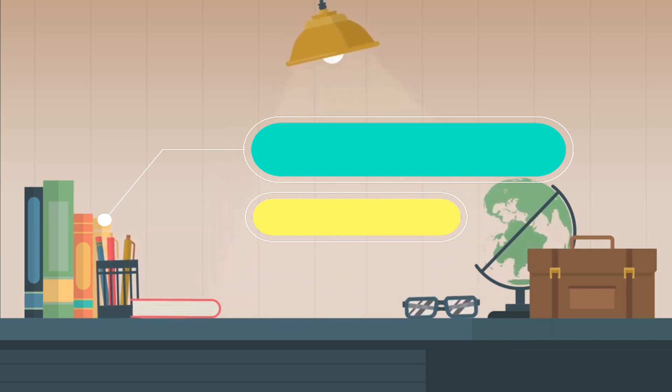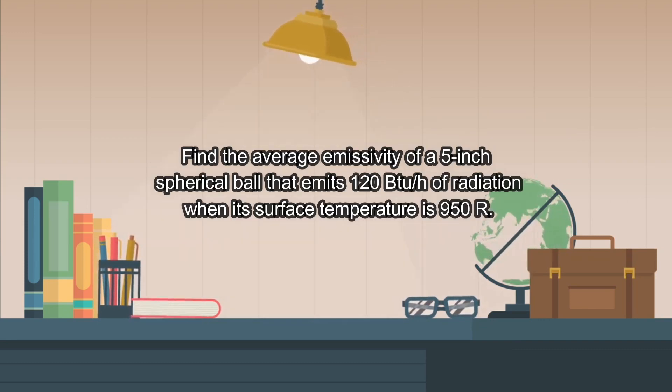So the question is, find the average emissivity of a 5-inch spherical ball that emits 120 BTU per hour of radiation when its surface temperature is 950°R.